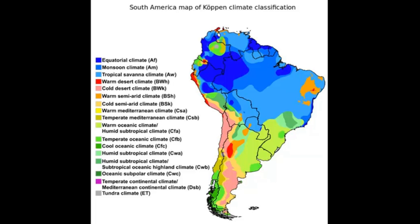We can see that just in this wide array of colors on this particular climate region map. In other particular regions, for example, Southeast Asia or the Middle East, there is very little variation. If there was, they were in upland areas, as the case is here with South America.